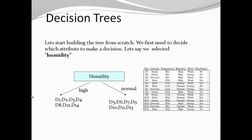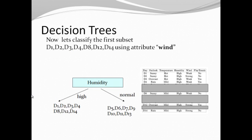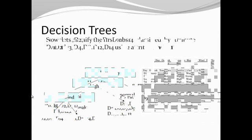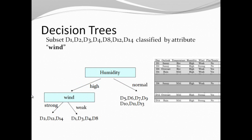Now choose one of the subsets, high or normal. For example, we are considering high. Under high, we have to choose another attribute. Let us say wind. Under the high attribute and wind, there are mainly two types: strong and weak. Under strong, D2, D12, and D14. Under weak, D1, D3, D4, and D8.